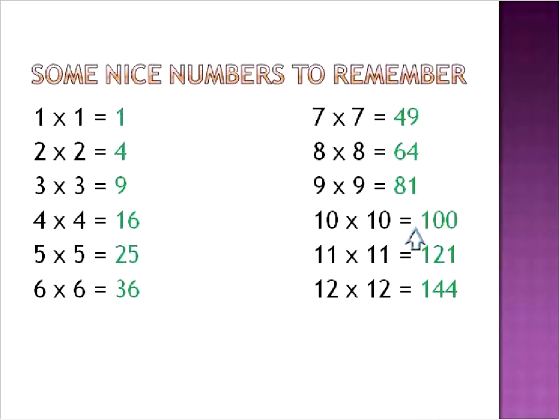You can pause the recording and write these down. They're just 1 times 1, 2 times 2, 3 times 3, all the way through 12. And when you see a number that is a perfect square, it's a nice number to work with when we're talking about getting square roots.